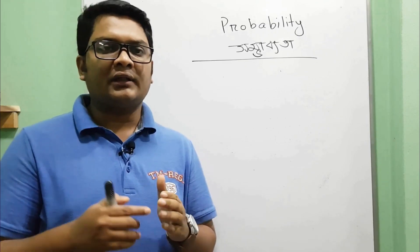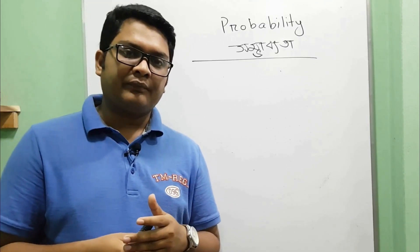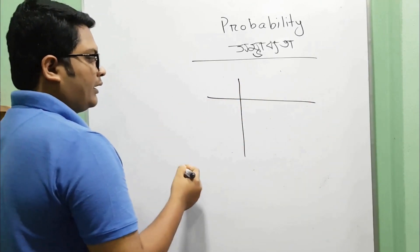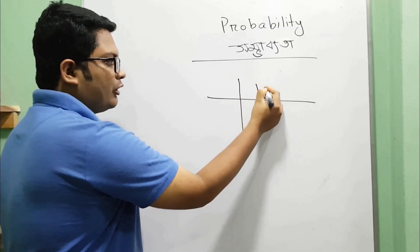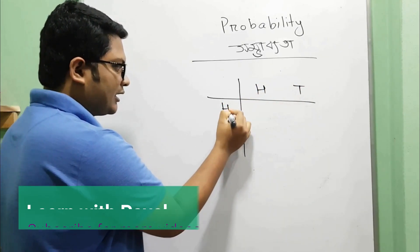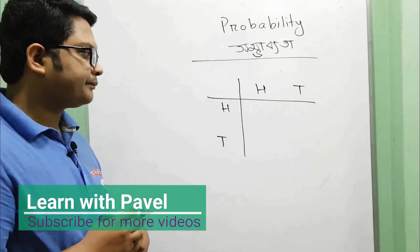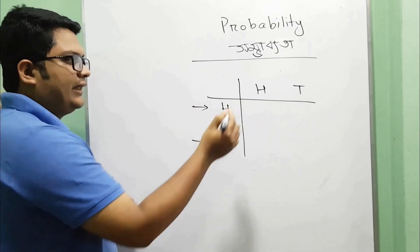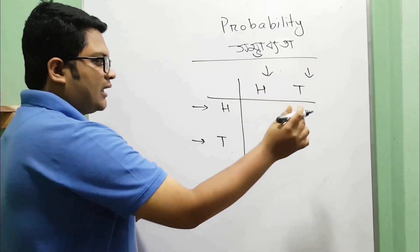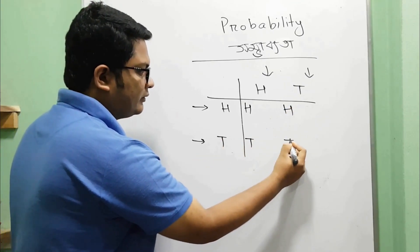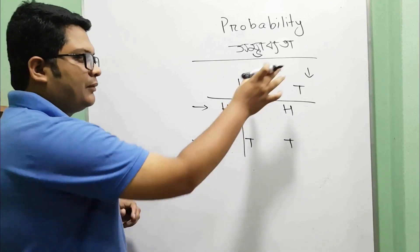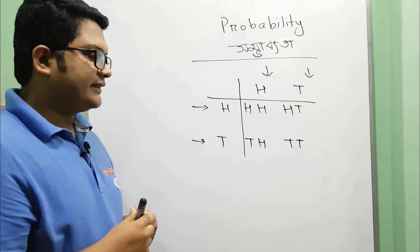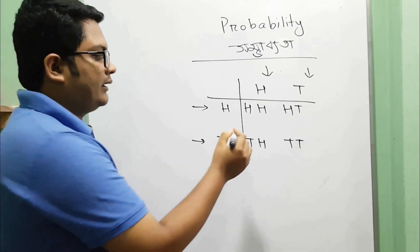This is the same as the head and tail. Let's combine this. This is the row-wise, and this is the column-wise. This is H, and this is T. We call this H-H and T.